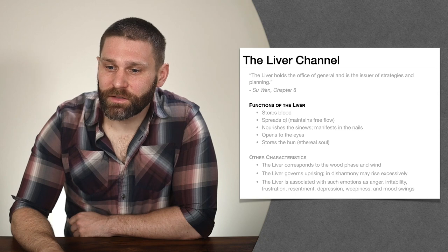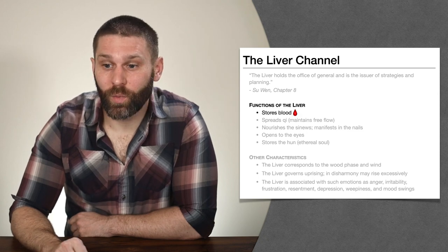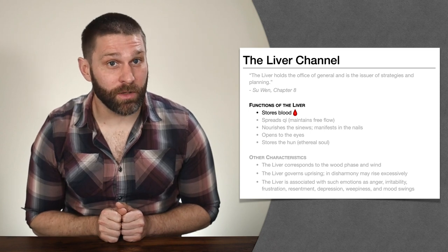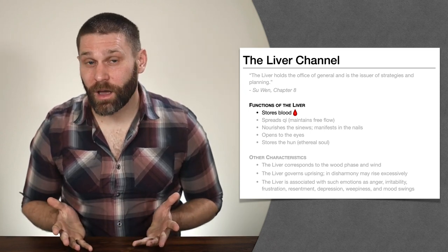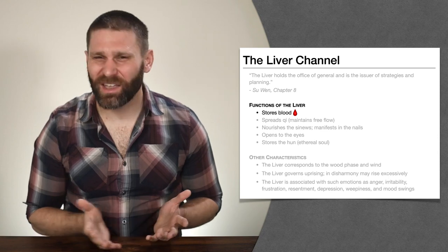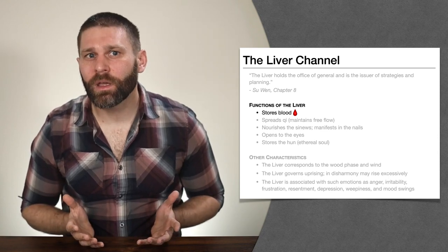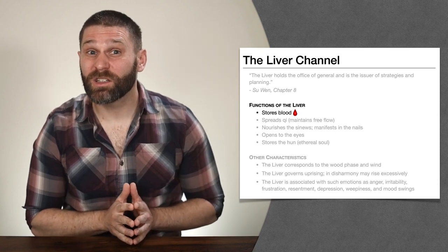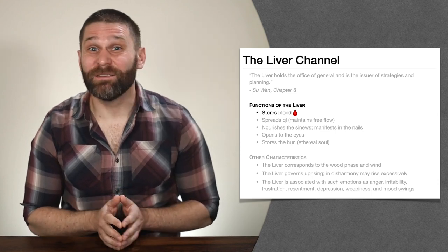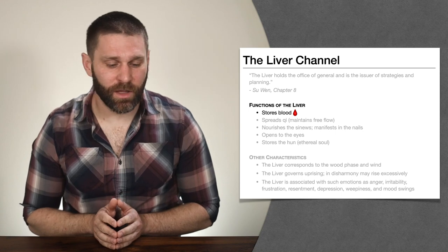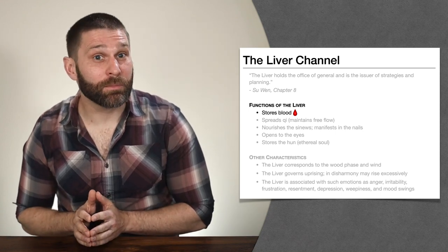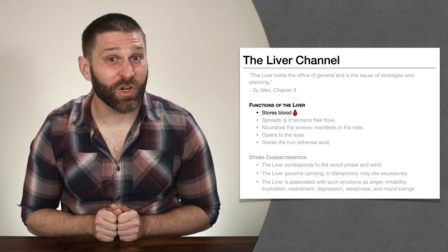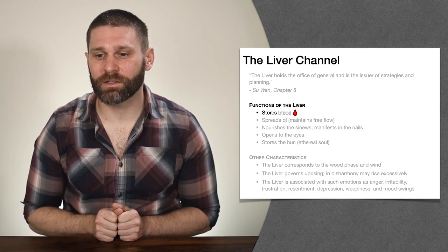Looking at the functions of the liver: one major function we always think of is that the liver stores blood. Anything that has to do with the blood is going to be related to the liver — we can think about this in terms of tonifying blood, invigorating blood, preventing blood stagnation, or clearing blood heat. All of these things are related to the liver because the liver stores blood and manages those resources.